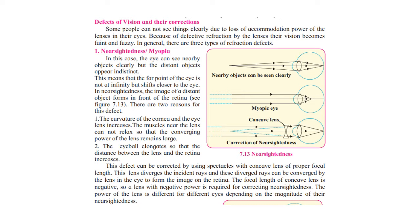In the previous lesson we learnt that in a normal human eye we have something called the power of accommodation, which helps the eye adjust its focal length when looking at objects far away or nearer. But sometimes people cannot see things clearly due to the loss of power of accommodation and defective refraction by the lenses.